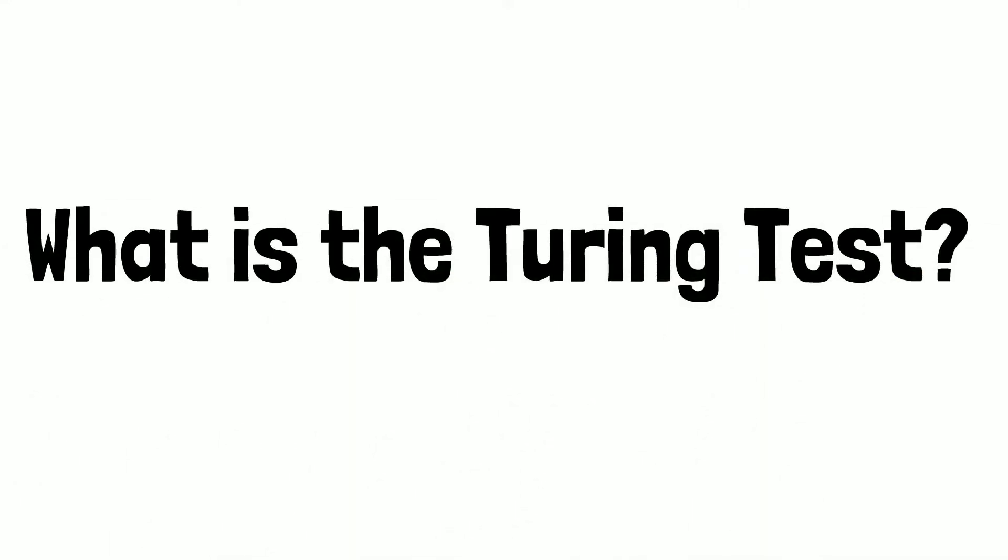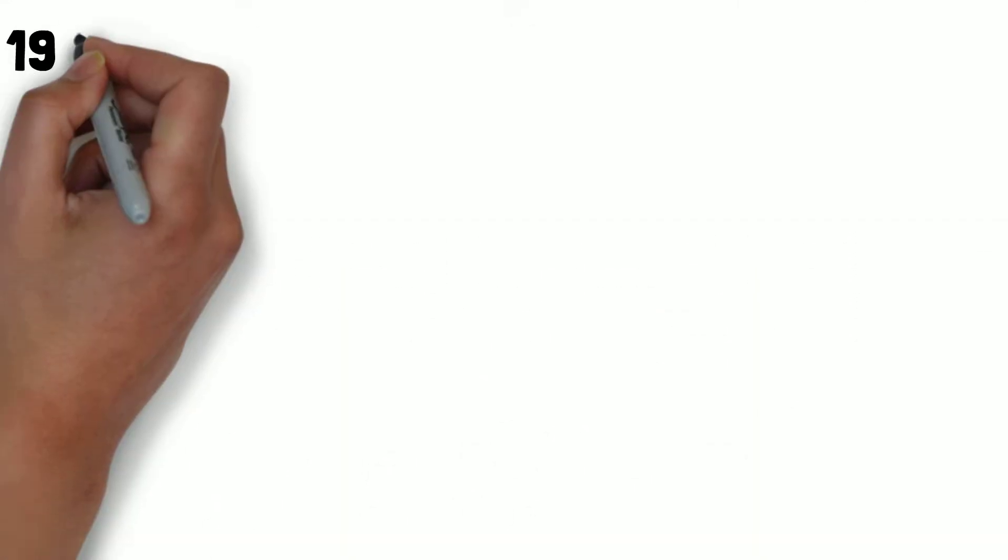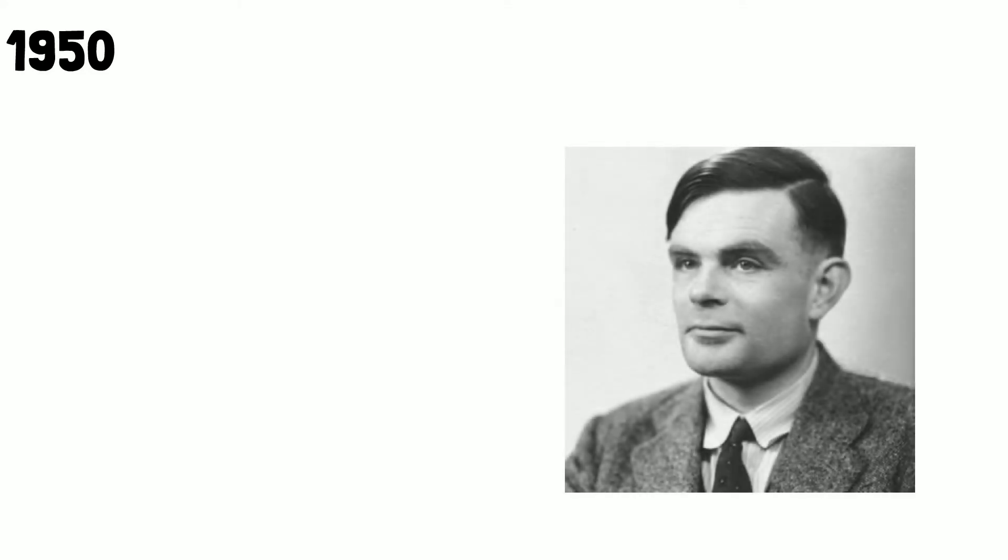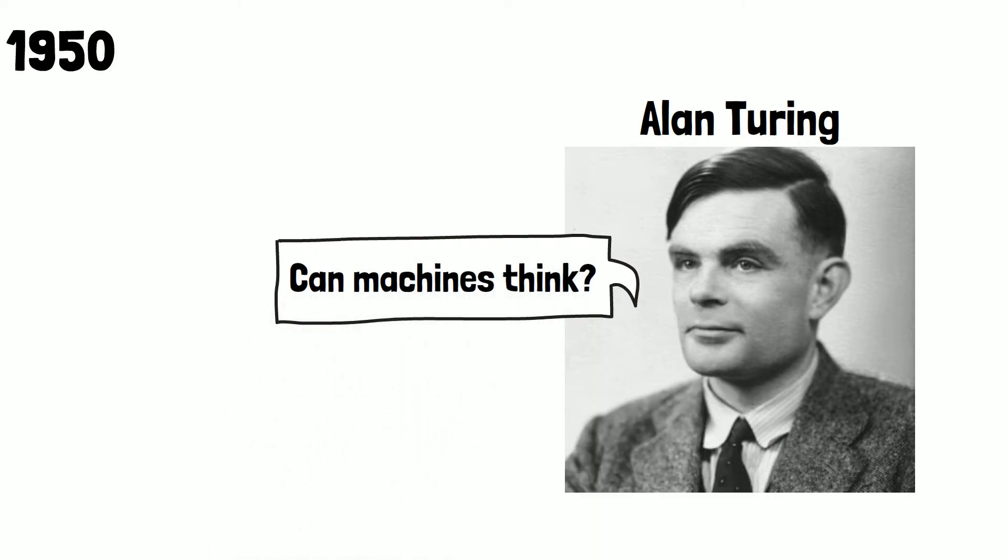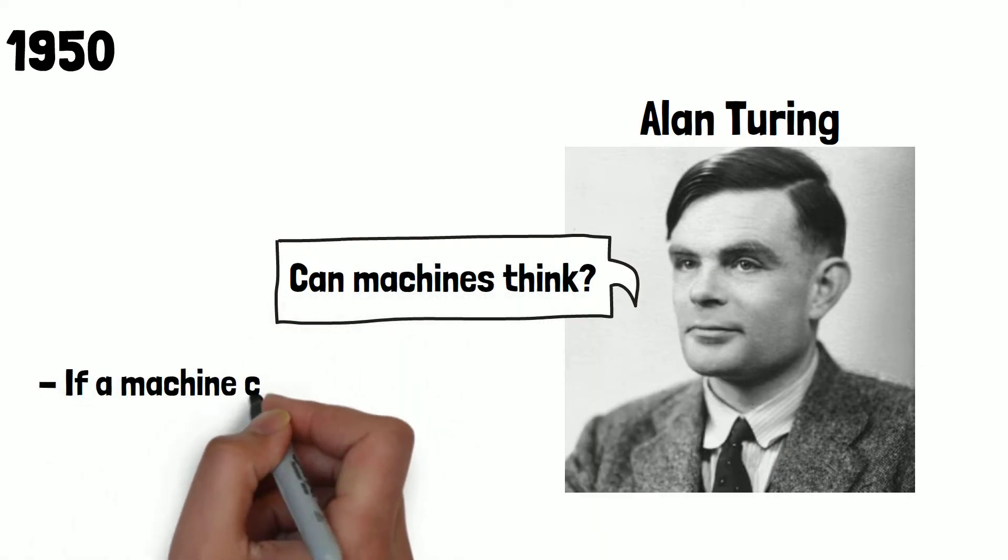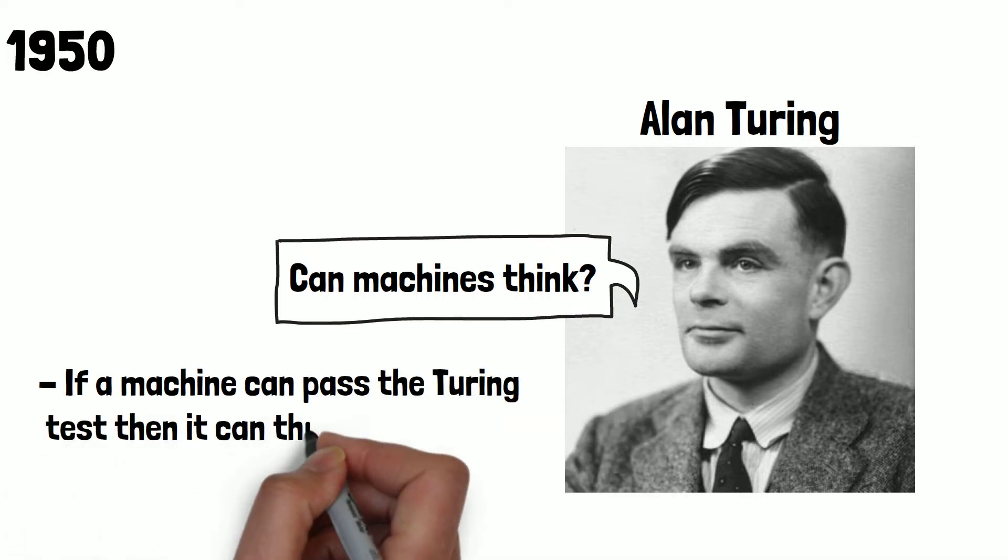What is the Turing test? In 1950, English mathematician Alan Turing posed the question: can machines think? He created a test to determine the answer to this question and theorized if a machine can pass the Turing test, then it can think.